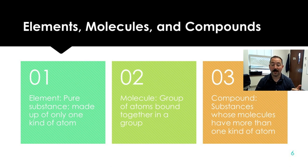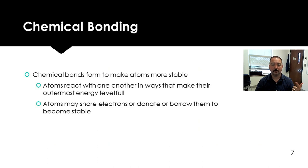So far, we've talked about what an atom is, the parts of it, and why they want to join up with other atoms or form bonds. So there are three ways that atoms can bond to form molecules. We have ionic bonds, covalent bonds, and hydrogen bonds.